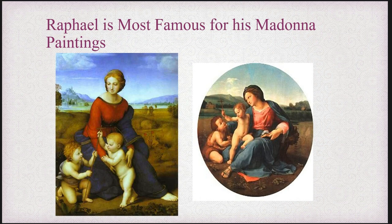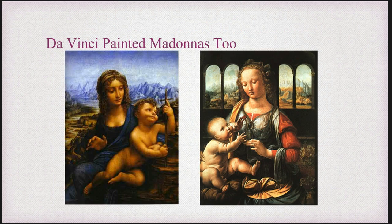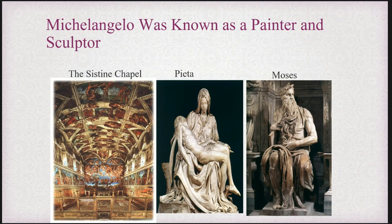Raphael is most famous for his Madonna paintings, as we can see here. Da Vinci also painted Madonnas too. Michelangelo was known as a painter and a sculptor. One of the things he's most famous for is the Sistine Chapel — he basically had to lay on his back and paint the ceiling of the church. This would not necessarily represent secularism because this would be religious in theme — of course, the church is paying him for this particular painting. The center piece is supposed to be Jesus coming off the cross, and Moses, a very prominent figure within the Bible, is sitting on the right.